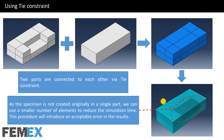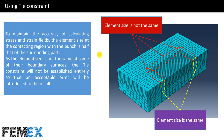If we put part 2 in place, we have the complete specimen, and this is the mesh of the specimen. These two parts are connected to each other via tie constraint. As the specimen is not created originally in a single part, we can use a smaller number of elements to reduce simulation time. To maintain the accuracy of calculating stress and strain fields, the element size at the contacting region with the punch is half that of the surrounding parts. As the element size is not the same at some boundary surfaces, the tie constraint will not be established entirely, introducing an acceptable error. In these boundary surfaces the element size is not the same, but in these boundary surfaces the element size is the same.